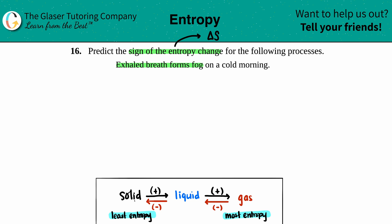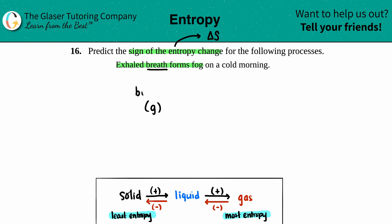Let's see what states we have here. Exhaled breath — what's coming out of our mouth when we breathe? There's CO2, there's O2. It doesn't really matter what compound we're talking about, but generally liquid or solid stuff are not coming out of our mouth. Breath is a gaseous thing; what's coming out of our mouth are gas particles. That's what the breath is comprised of — it's gas.